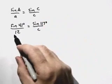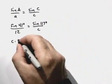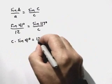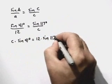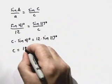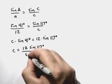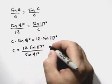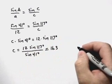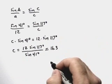We'll multiply both sides of the equation by C and multiply both sides by 12 to get C times the sine of 41 degrees is equal to 12 times the sine of 117 degrees. This gives us that C is equal to 12 times the sine of 117 degrees divided by the sine of 41 degrees, which is approximately 16.3. So the third side has length roughly 16.3 units.